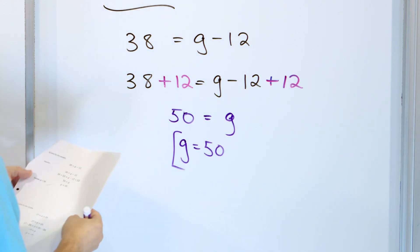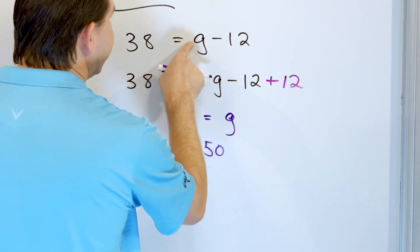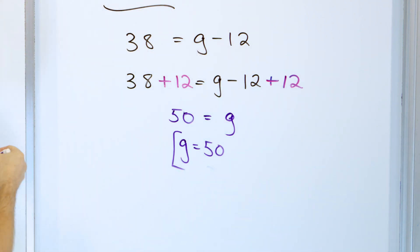That is the final answer. You can put 50 back in: 50 minus 12 is 38, so you know the answer is correct.